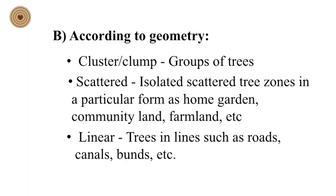Another classification is according to geometry. They are: clump or cluster, which means groups of trees; scattered, which means isolated trees in particular forms such as home gardens, community land, and farmland; and linear, where trees are in lines such as roads, canals and bonds.